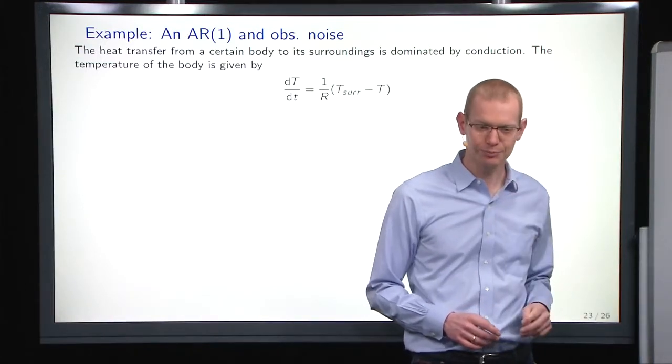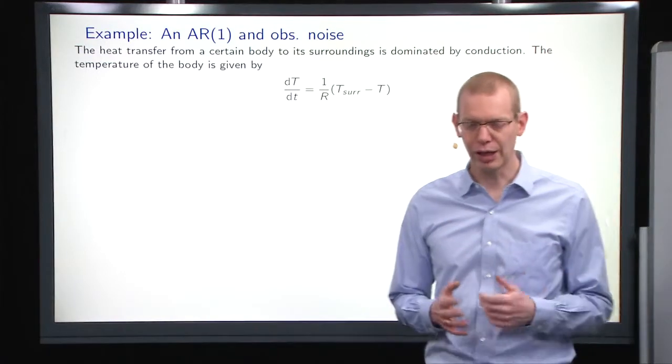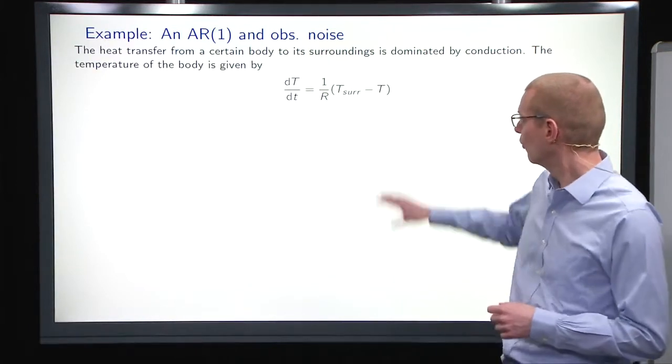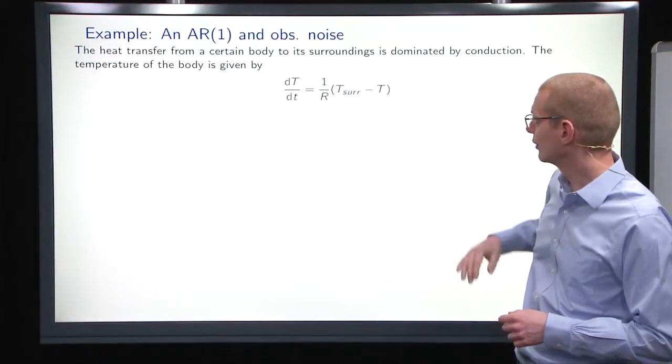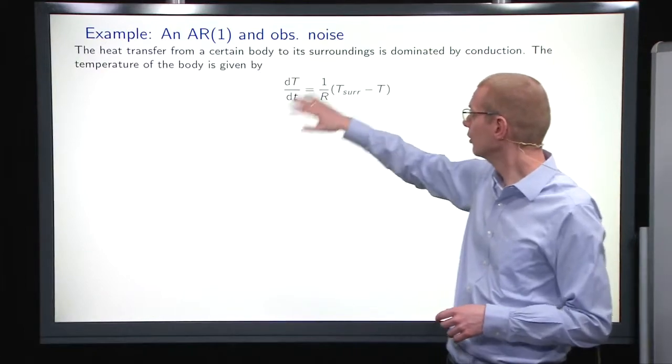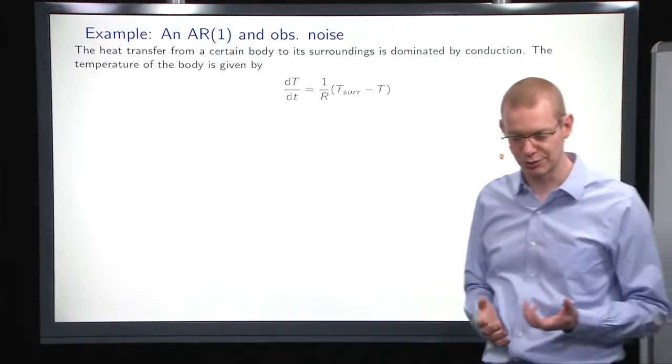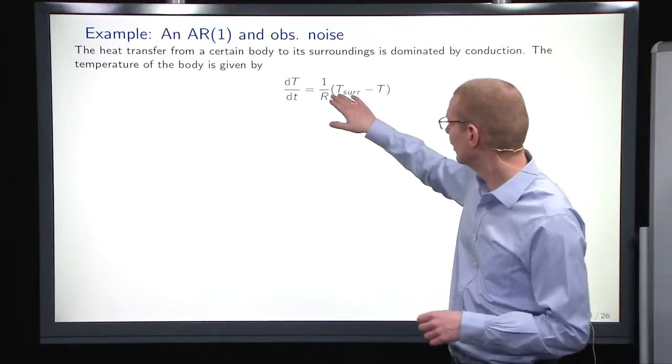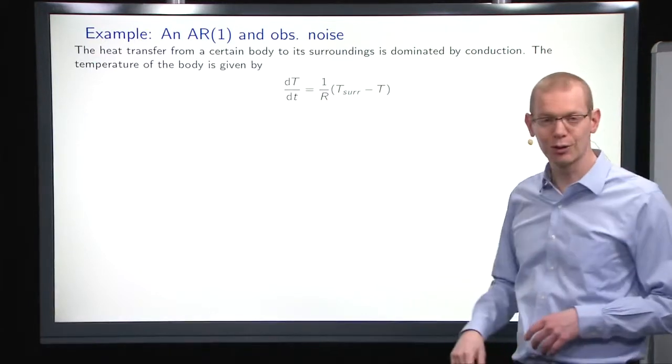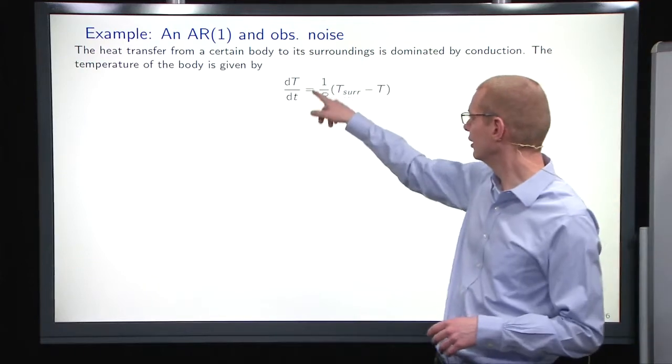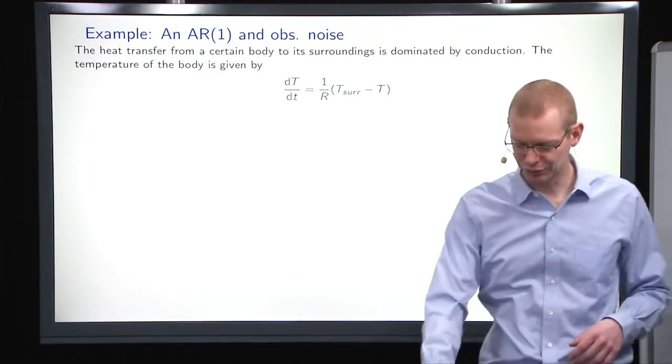To just give you an example, we are looking at an AR1 model here. Let's just look at the heat transfer from a body to its surrounding and basically assuming that it's just conduction. And then it's just a first order differential equation with some insulation layer and then you have a temperature difference.